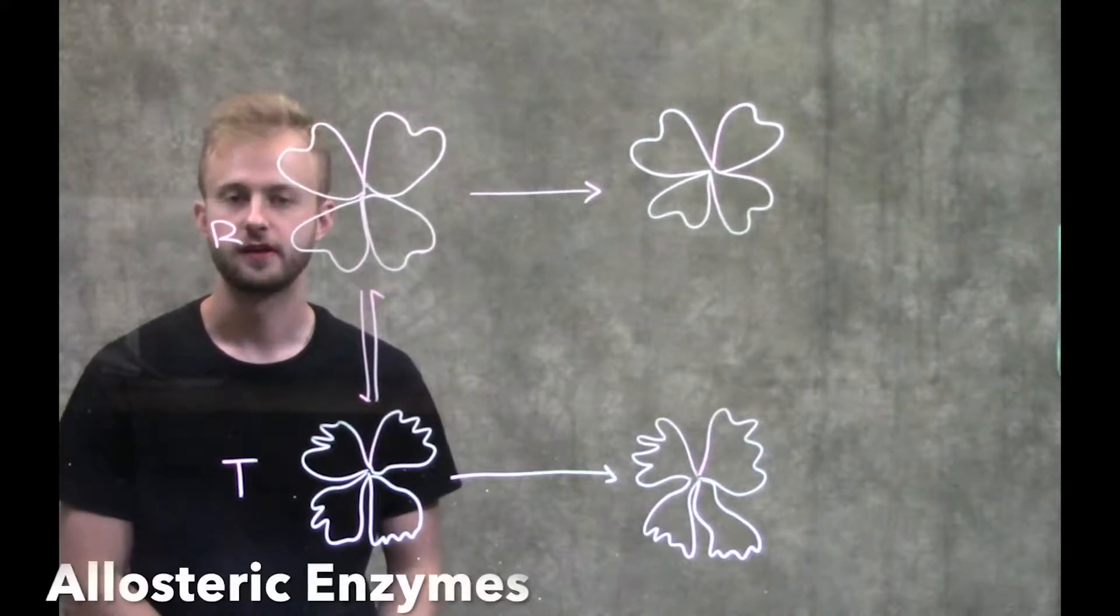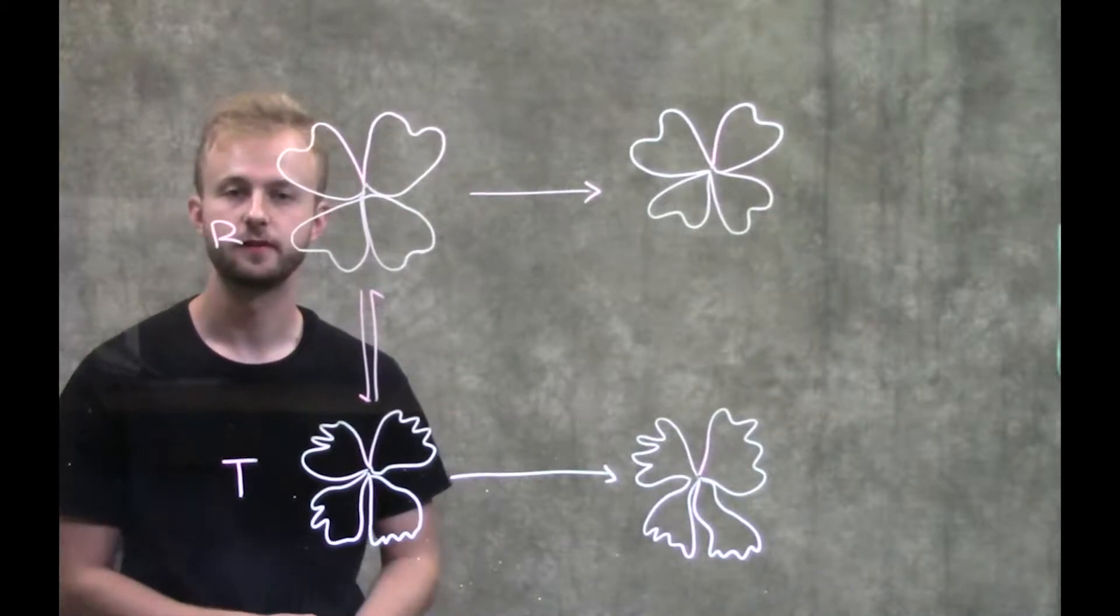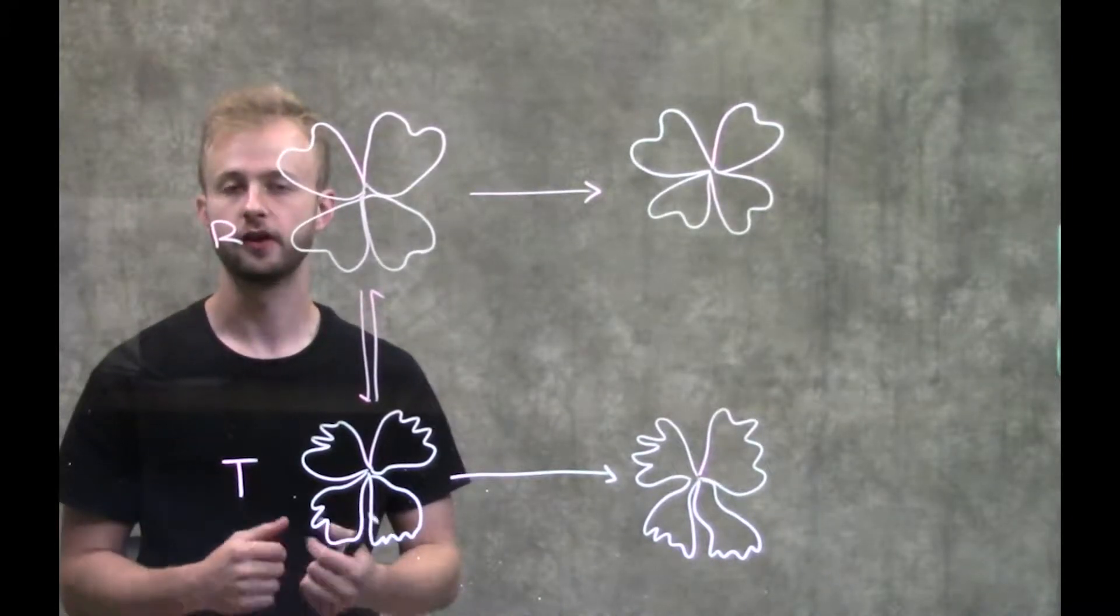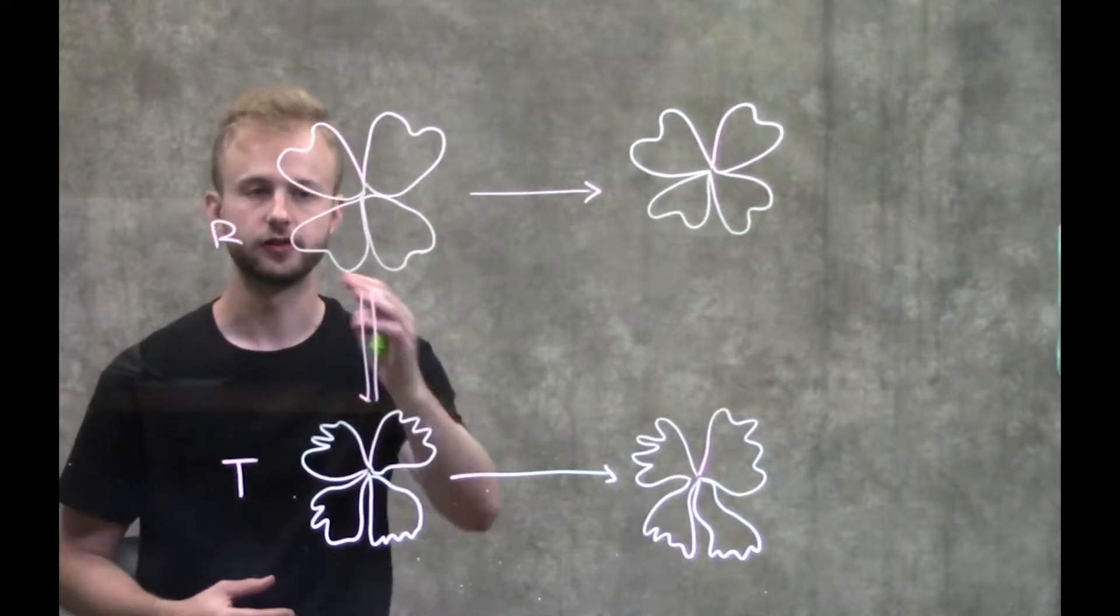This video is going to be about allosteric enzymes. Allosteric enzymes are multi-subunit enzymes that are all interacting with one another and are able to communicate with one another within this larger enzyme.